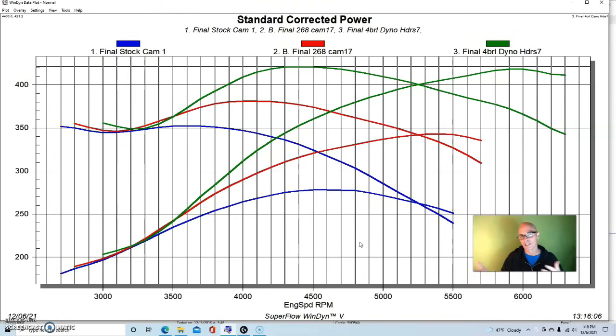we weren't really concerned because it was not a daily driver deal. So an aggressive ramp rate, a tight LSA, short lift. You know, it had duration in it obviously, more than our Extreme Energy 268 hydraulic flat tappet. Again, it was a hydraulic flat tappet cam. There was nothing tricky done with the lifters.